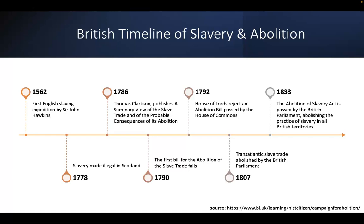It isn't until finally 1807 that the transatlantic slave trade is abolished by the British Parliament. Now, what that means is that the trade of slaves was abolished, but slaves who were already owned were not freed. The complete abolition of slavery was not passed until 1833. So we can see that is quite a stretch of time.